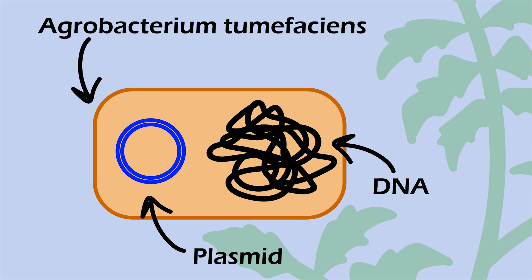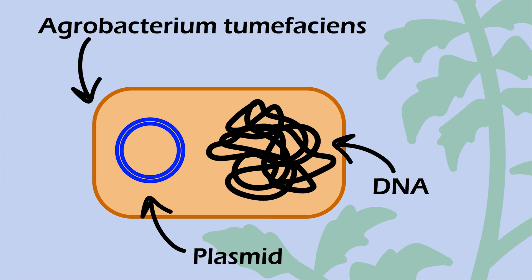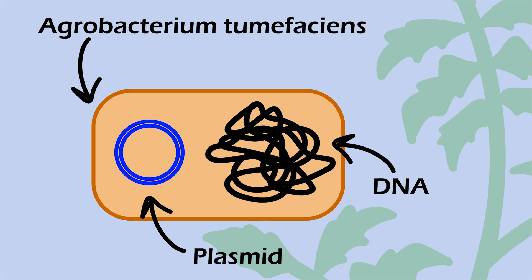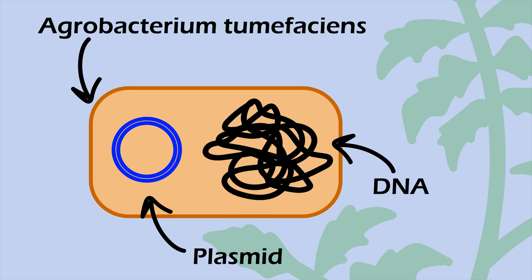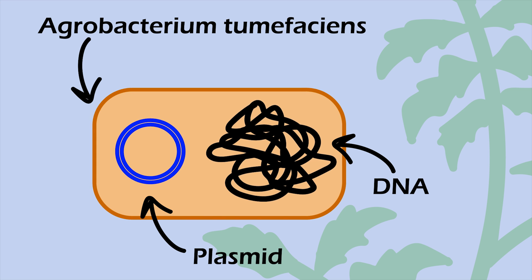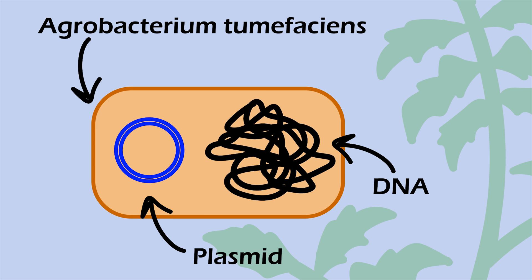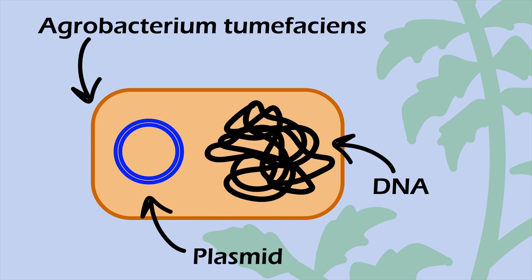Agrobacterium tumefaciens is a bacterium that naturally infects plants and uses the plant cells to express its DNA. Researchers can use this process to insert a gene they are studying into the plant and examine the transient expression of the gene within a cell.